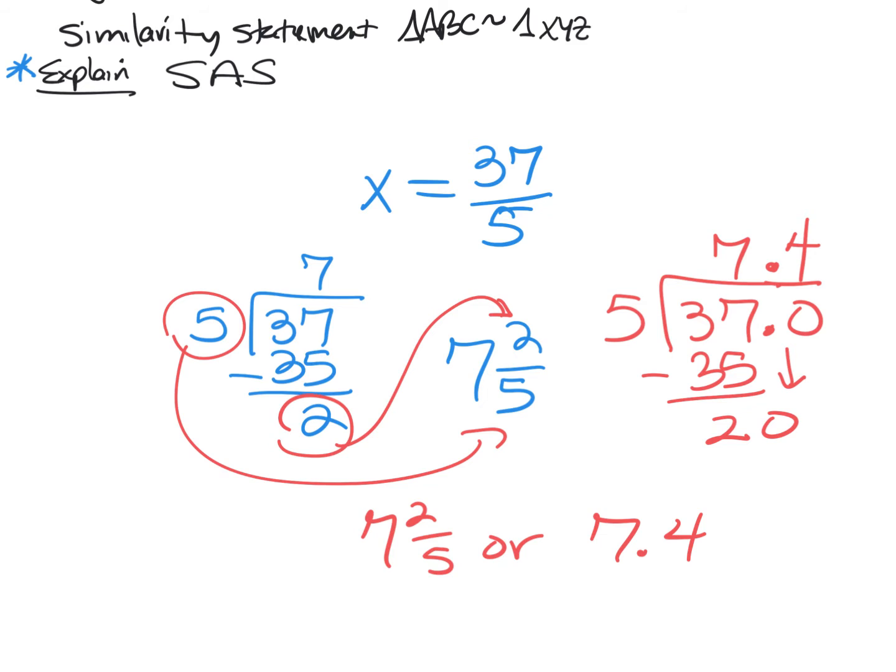You can have decimal answers — yes. I would accept the answer to a question like this either way. But don't round anything. If you round and you don't give me the exact answer, I'm going to take off more points than I did on the quiz, because by now everyone should know how to multiply and divide.